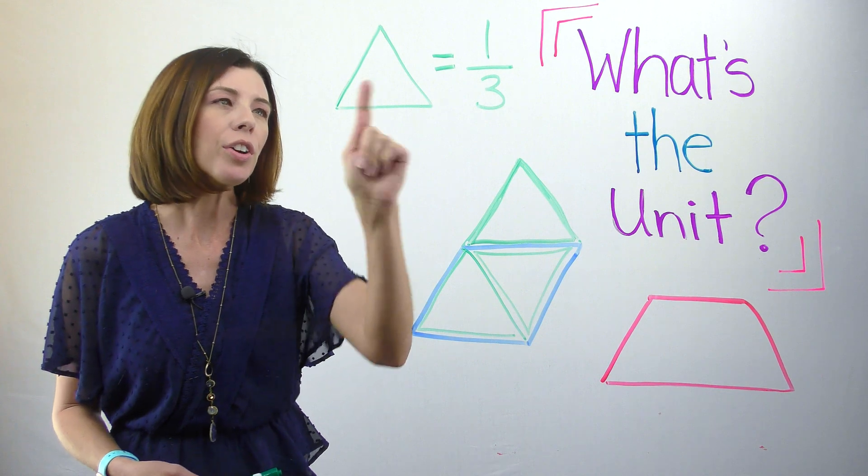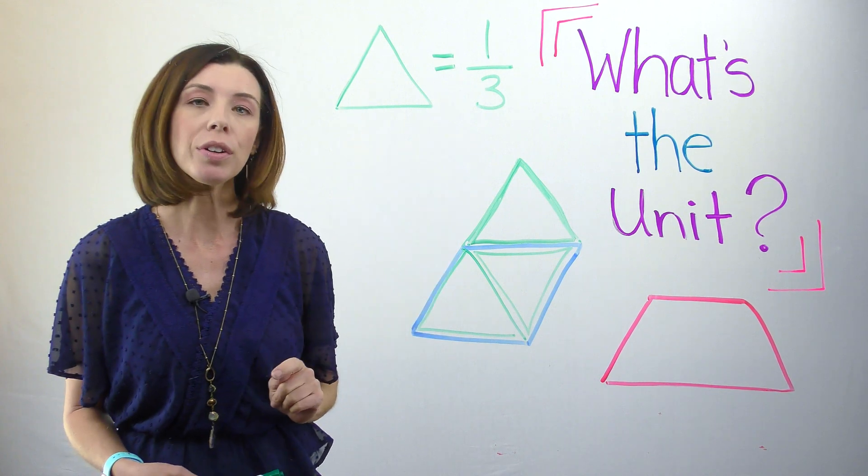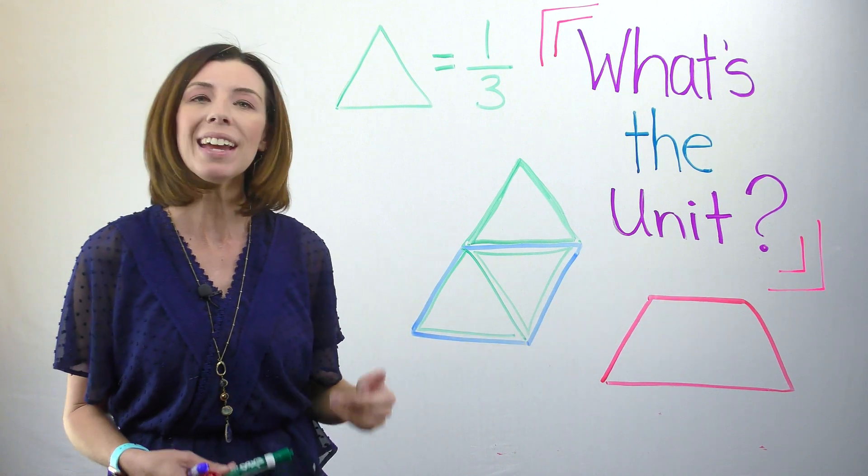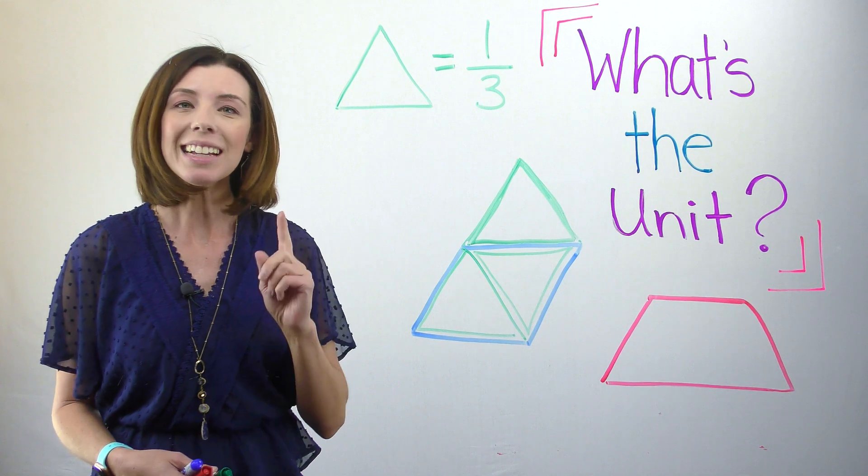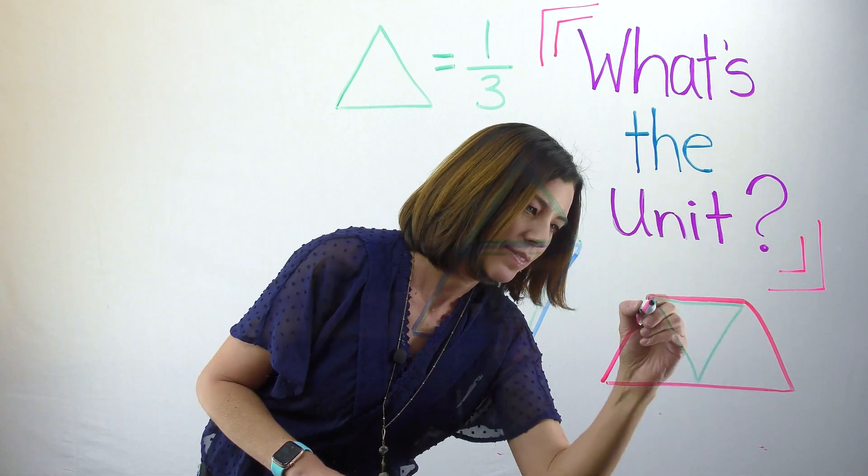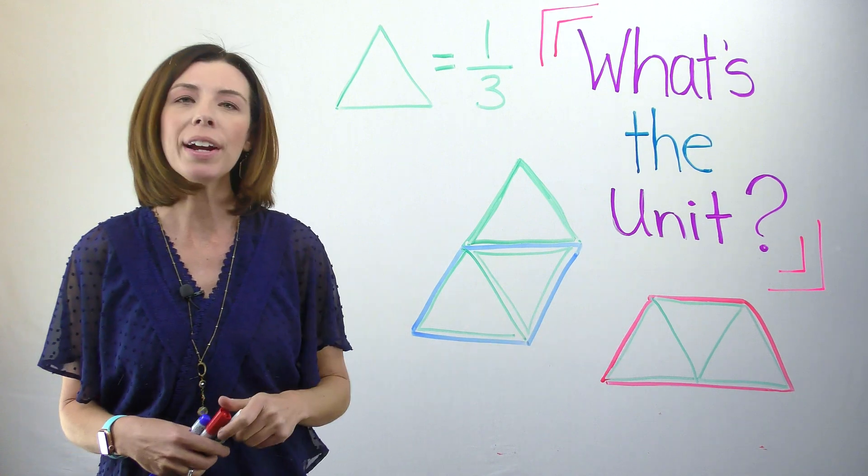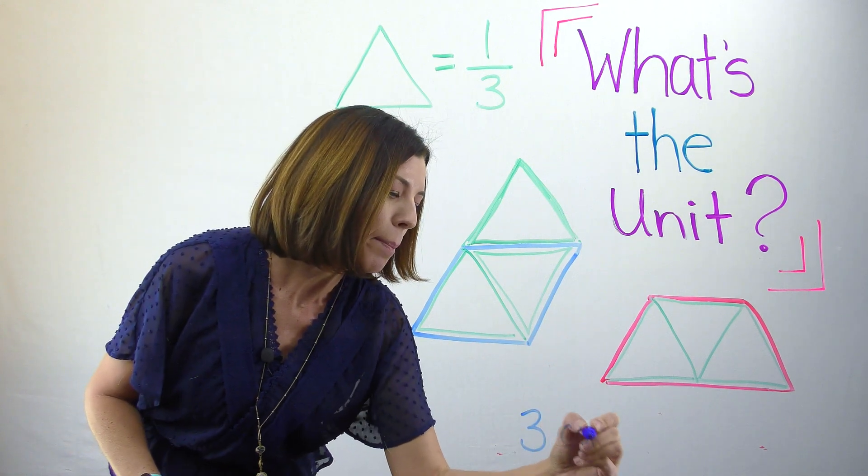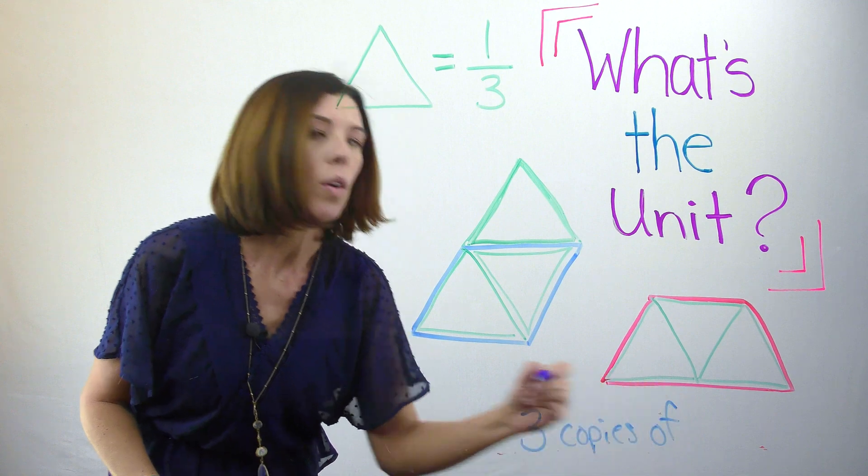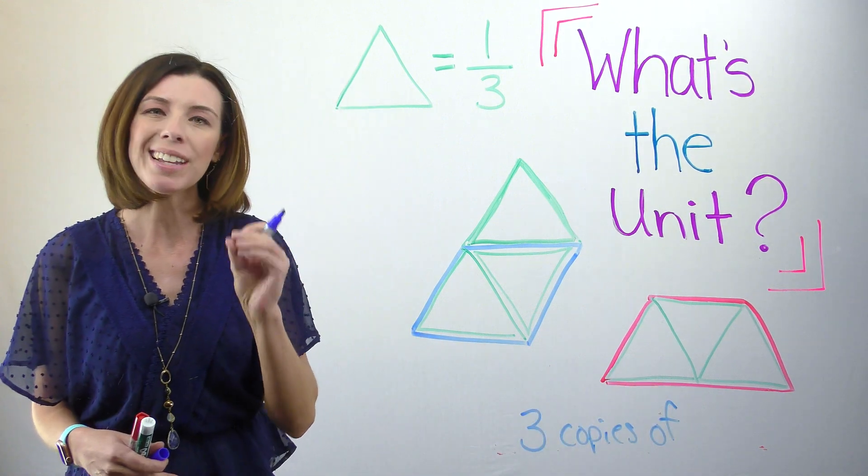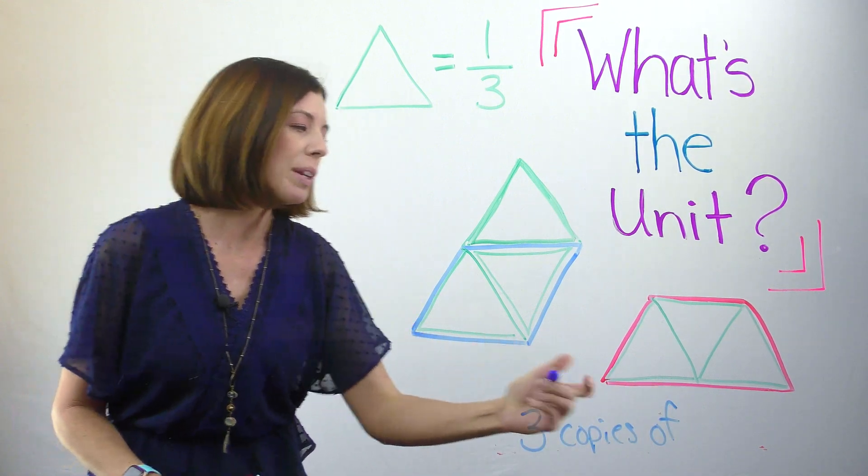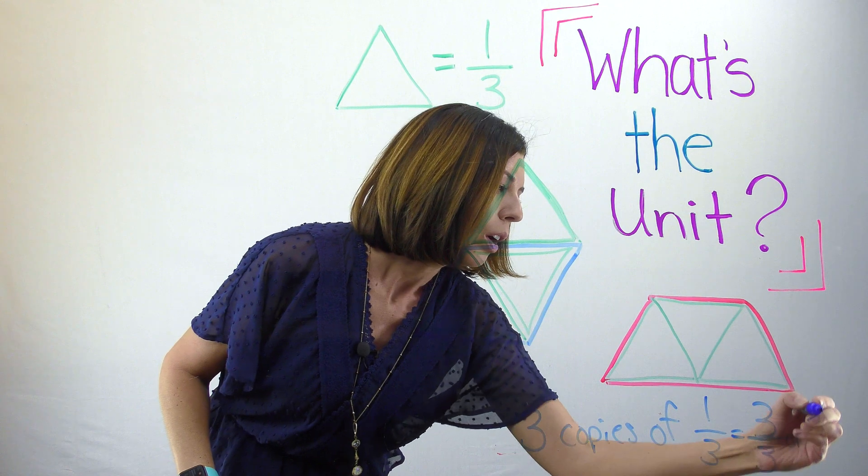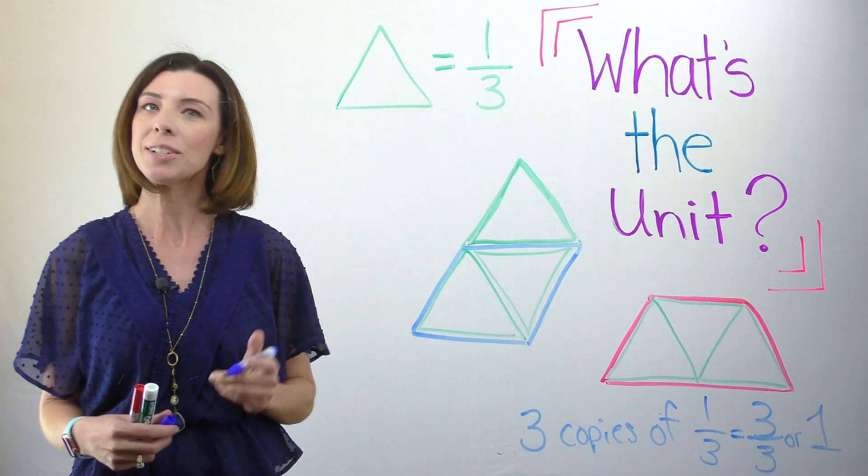If I know that the green equilateral triangle is one third of the whole, then I could think of how many green equilateral triangles could fit inside of that red trapezoid. Let's go ahead and put them on and see if we can figure it out. I can see that three green triangles fit inside the red trapezoid. So really, I can think of this as three copies of, now the green equilateral triangle, but what fraction is that? It's really a third. So it's three copies of one third, which is equivalent to three thirds or one, one whole, right? Interesting. That makes sense.